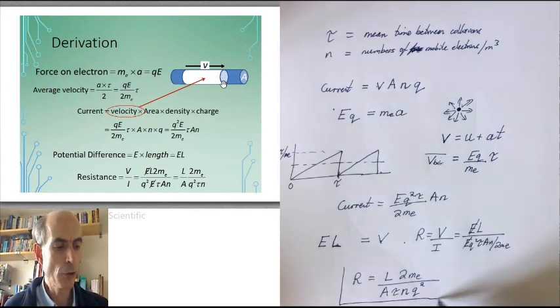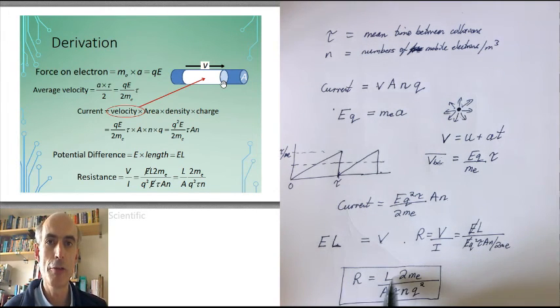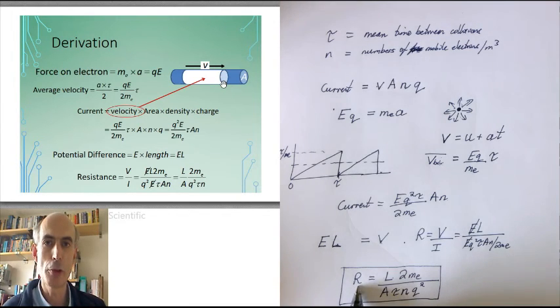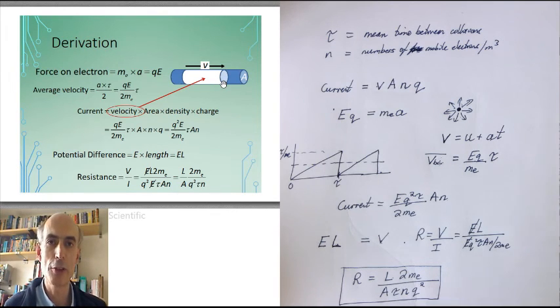And you'll notice that this is not a function of the electric field strength, and it's not a function of the current. So that is confirming Ohm's law. The ratio of the current to the resistance is constant. It's not a function of the voltage difference, it's not a function of how much current is actually flowing.